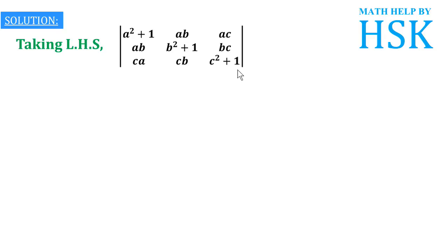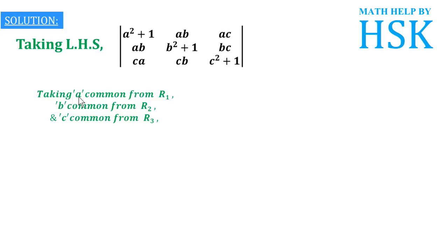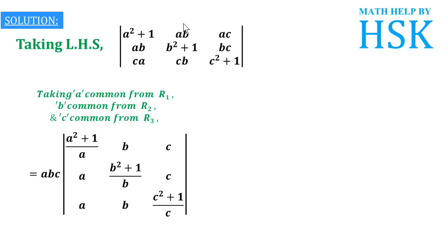Now, to solve this I am going to do something very tricky. From row 1 I am going to take a as common, from row 2 I am going to take b as common, and c as common from row 3. So on taking a, b, and c from R1, R2, R3 respectively, from terms like ab and ac I have taken a common, but from a²+1 I cannot take a common so I have divided a²+1 by a. Similarly for the b and c rows.